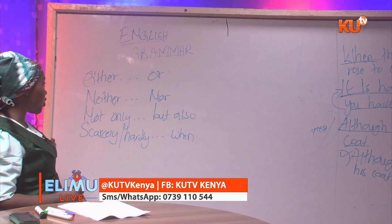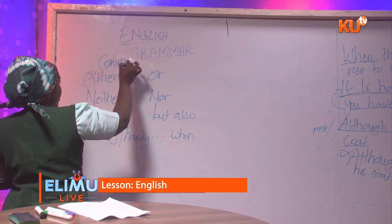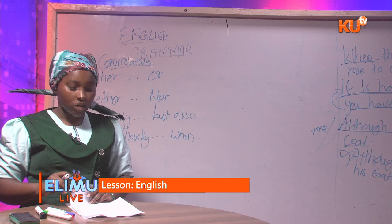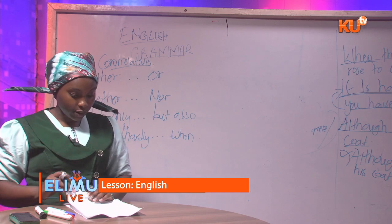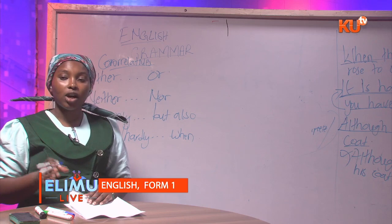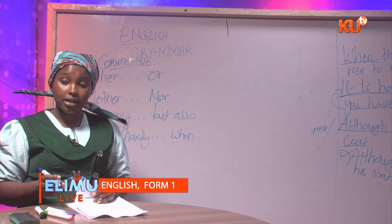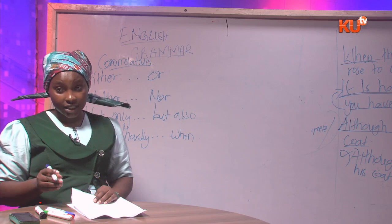Those are just examples of correlative conjunctions — there are quite many. Correlative conjunctions are covered in form three, subordinating conjunctions in form two, and coordinating conjunctions in form one. That is it for today. We've covered conjunctions, which are part of the word classes in grammar. If you understand them, you will understand grammar and never fail a question concerning grammar.